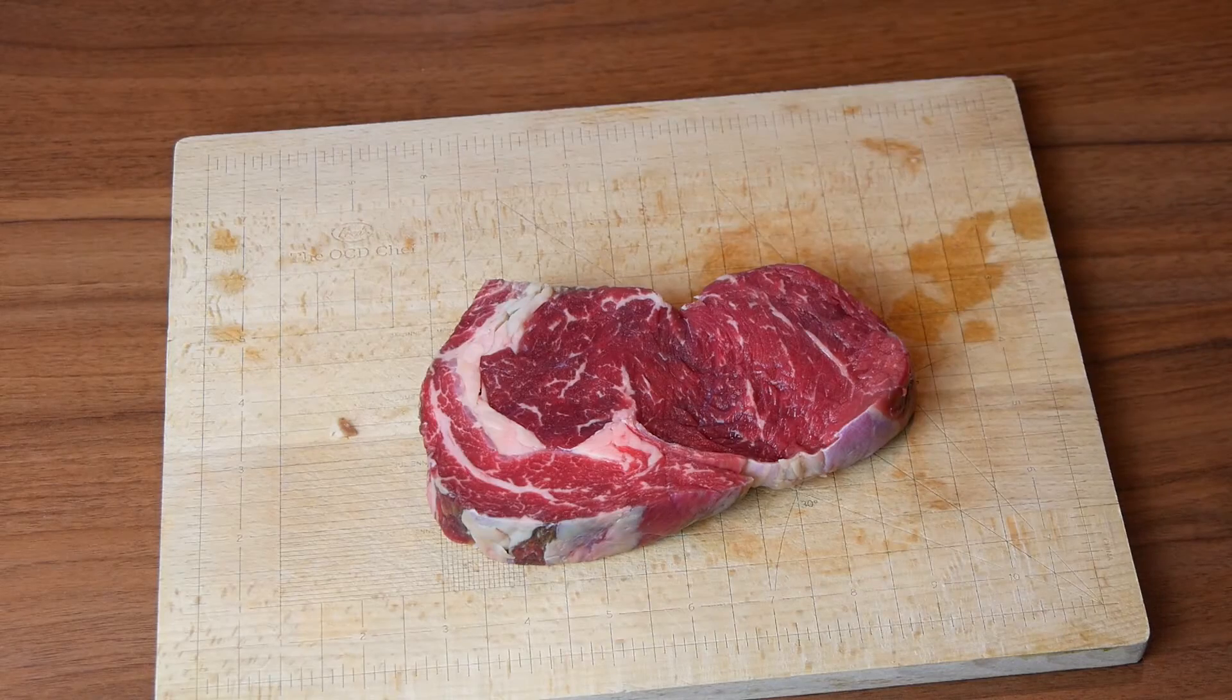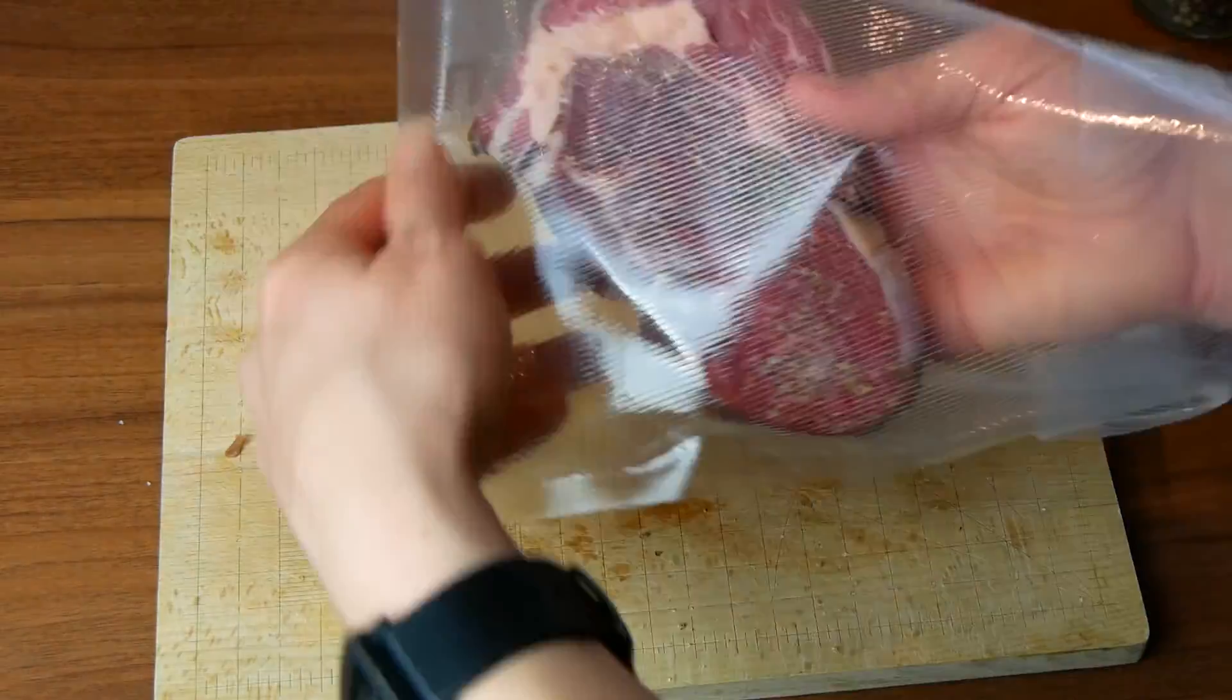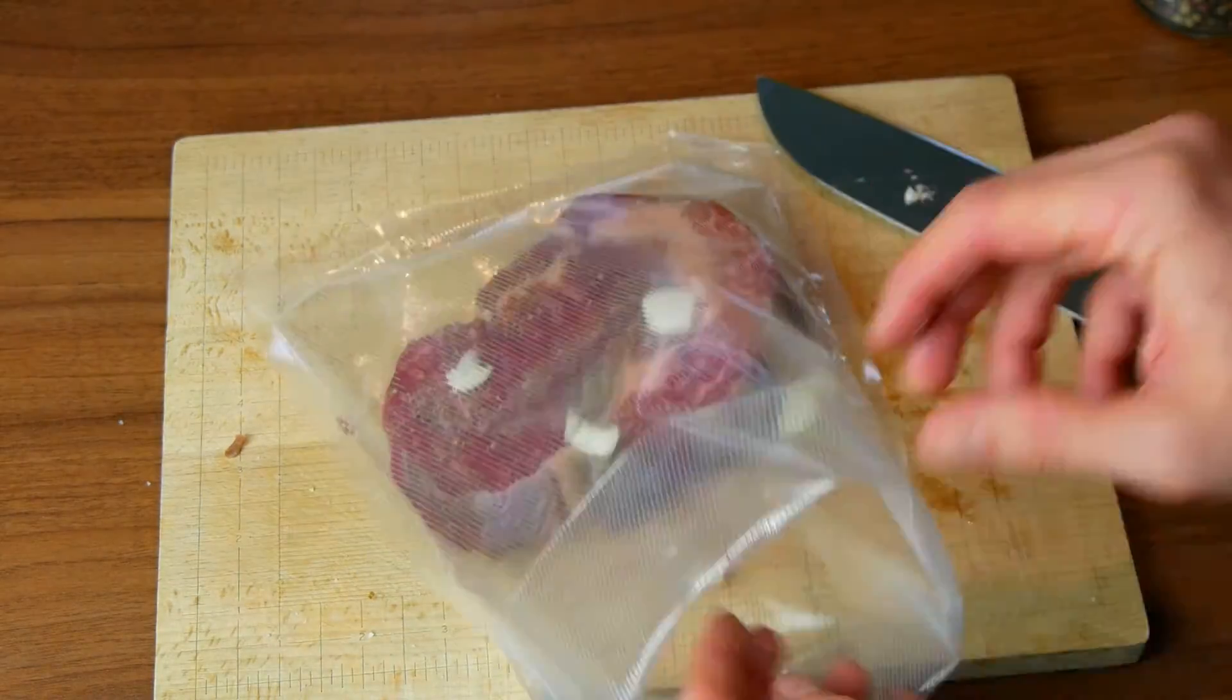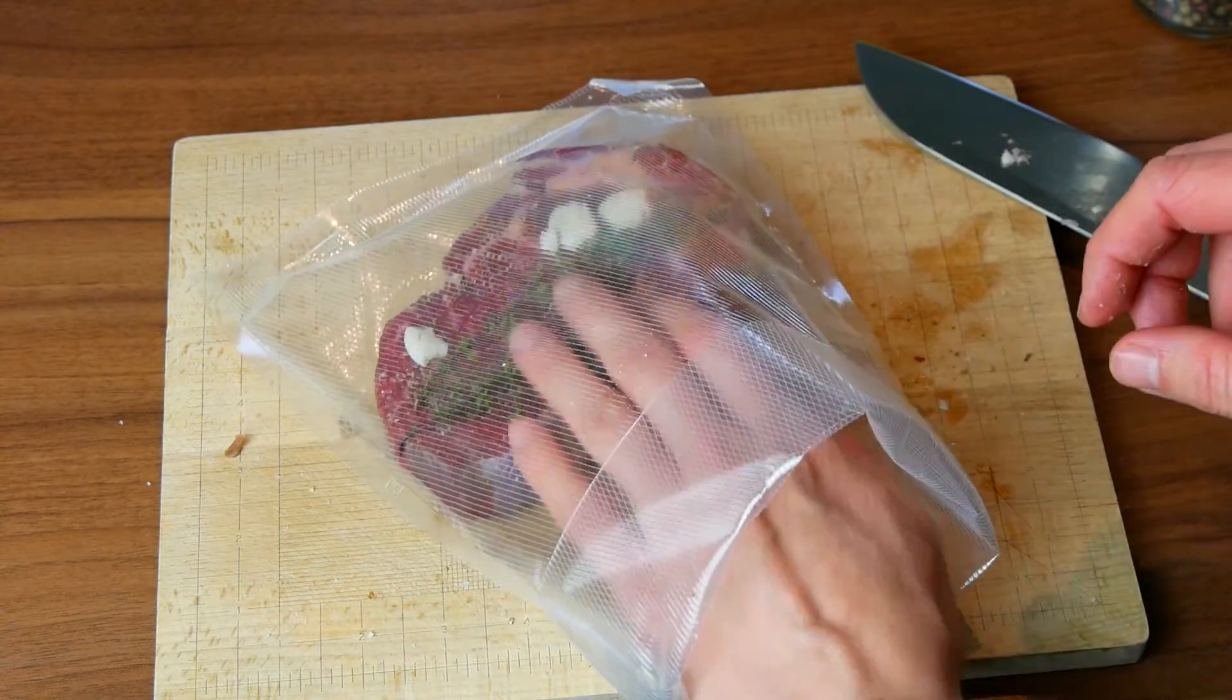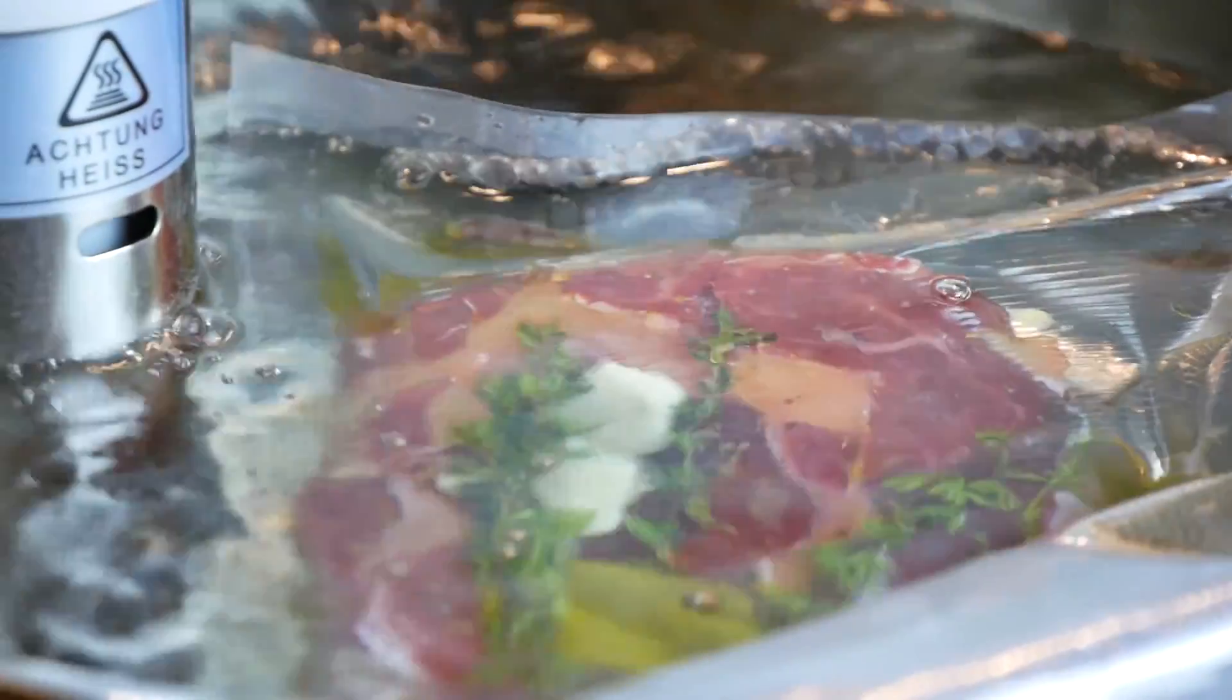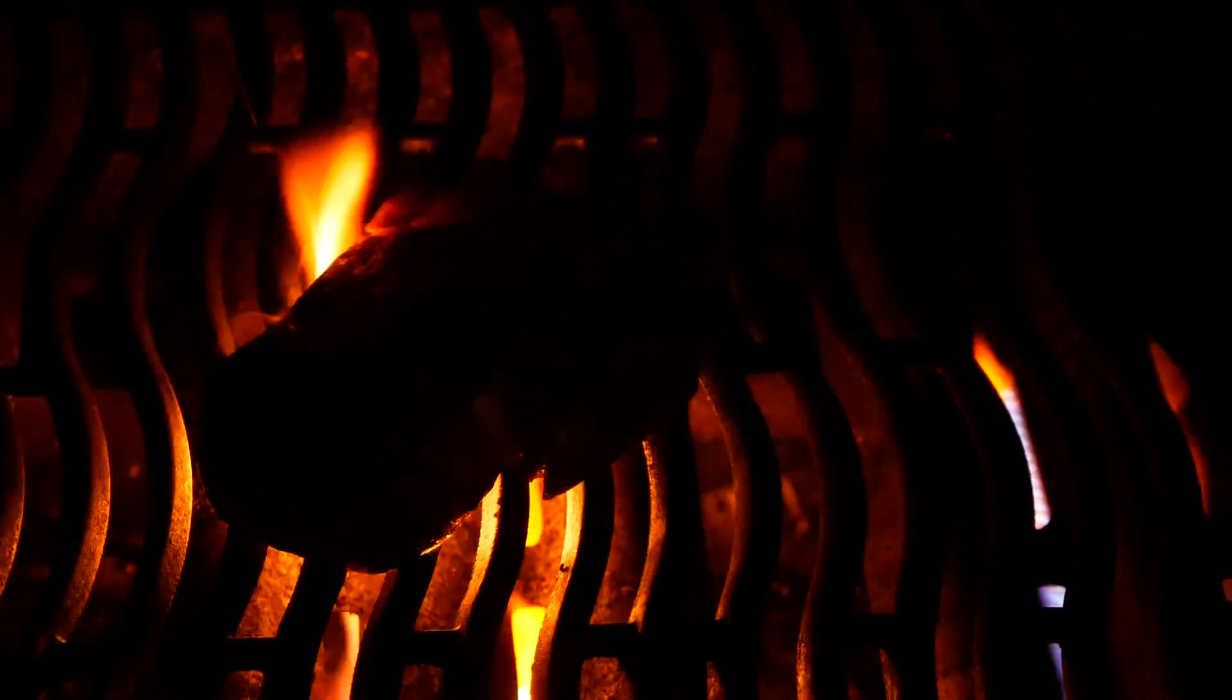Now to the fun and tasty part. My local butcher did not have any T-bone steak available so I instead bought a piece of ribeye steak. I put it into a vacuum bag along with olive oil, salt, pepper and herbs and cooked it sous vide to get a perfectly medium steak. After an hour I put it on my grill for a nice tasty finish.